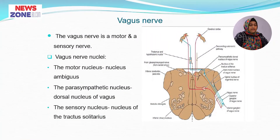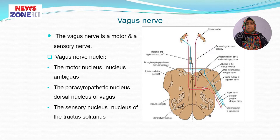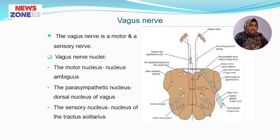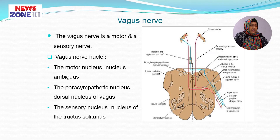The tenth cranial nerve is named the vagus nerve. The vagus nerve is a motor and sensory nerve — that means it is a mixed nerve. The vagus nerve nuclei include a motor nucleus, the nucleus ambiguus; a parasympathetic nucleus, the dorsal nucleus of the vagus; and the sensory nucleus, the nucleus of tractus solitarius.